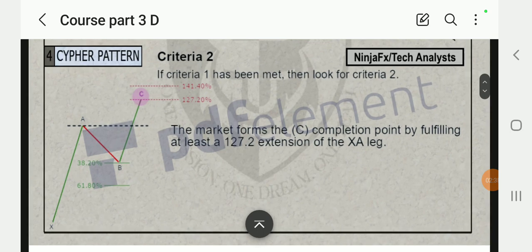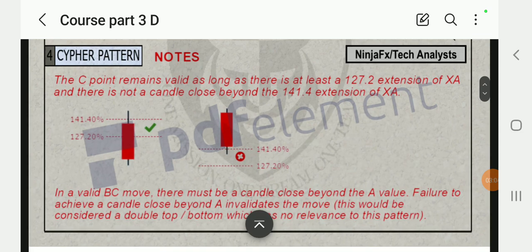In criteria two, once criteria one is met, look out for criteria two. The market forms a C completion point fulfilling at least 127.2 extension of XA leg. So in this case, in Fibonacci retracement it went back down then went up, so it created a move that went up to the upside creating the C point.